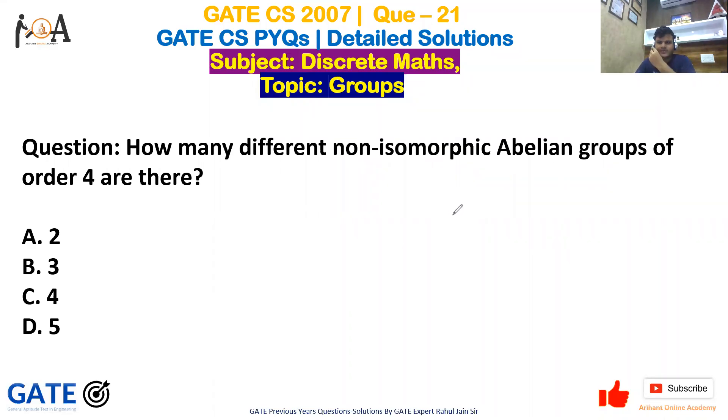Hello students, how are you? Hope you all are doing very well. In this video we are going to discuss a very important question from GATE CS 2007. The question is: How many different non-isomorphic Abelian groups of order 4 are there?